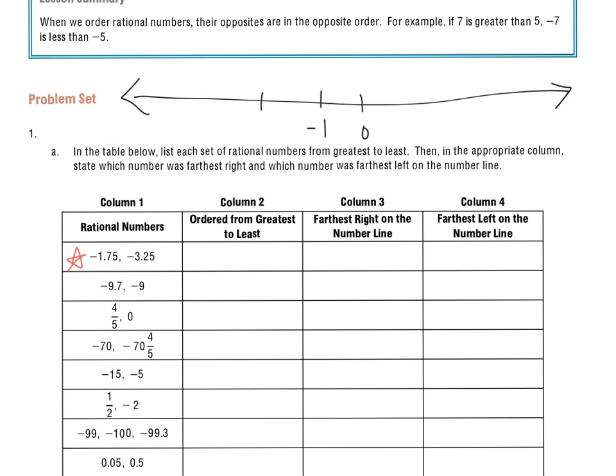There's 0, negative 1, negative 2, negative 3, and negative 4. And I know that negative 1 and 75 hundredths is between negative 1 and negative 2, more towards the negative 2 side, because it's past the halfway point. So there's my first label, and then I see negative 3 and 25 hundredths. It's between 3 and 4, and it's a little closer to 3, because it's not quite to the halfway point. So I'll mark it right there.